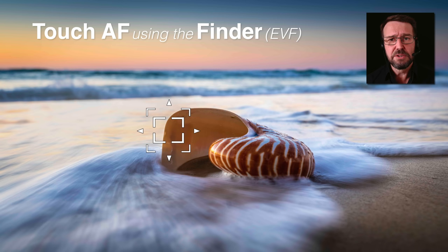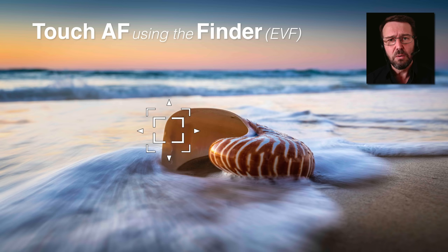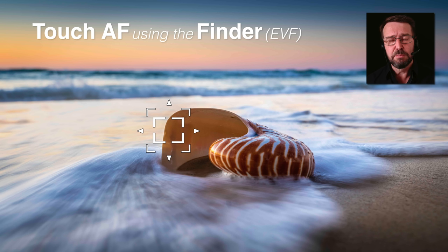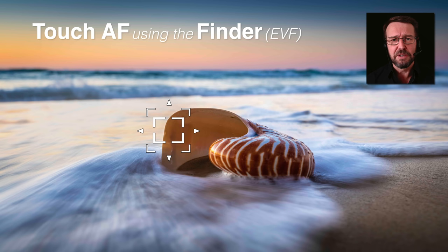We are able to use the EVF or finder for moving the focus point. On some cameras we can't do touch tracking, so we have to use touch AF. This is useful where the subject isn't moving and we just need to control which precise area we want the camera to focus on. With the camera at our eye and a spot AF option implemented, we can put our thumb on the monitor and move that spot AF point to exactly the right area. The camera likes vertical edges, which is why I've moved the focus area to that part of the shell in order to focus quickly.